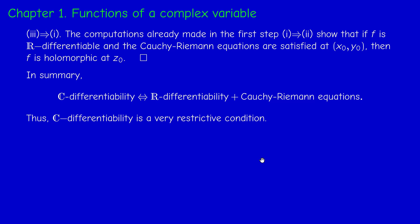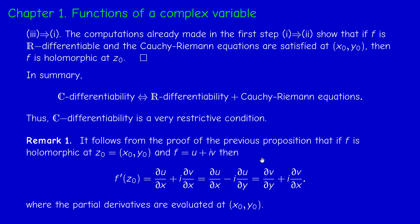Two remarks follow. First, from the Cauchy-Riemann equations we know F'(Z₀) = α + iβ, and we can write this derivative in four ways: α + iβ, using the partial derivatives of u and v in various combinations via the Cauchy-Riemann equations. Second, regarding the norm: what is the Euclidean norm of the matrix as a linear bounded operator? By definition, it is the supremum of the norm of the operator applied to H, for H in the unit ball.